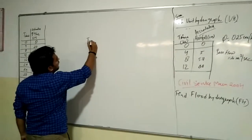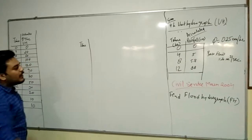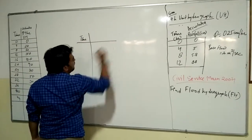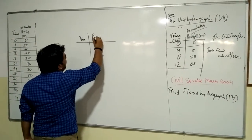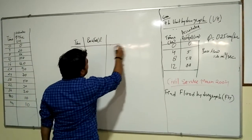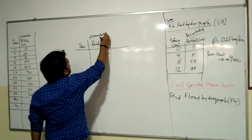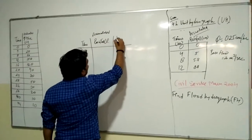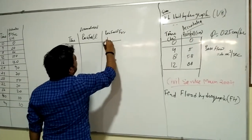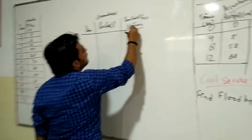Accumulated rainfall. We have to calculate the rainfall for the first four hours, second four hours, and third four hours. This is accumulated rainfall and this is rainfall for the first four hours.